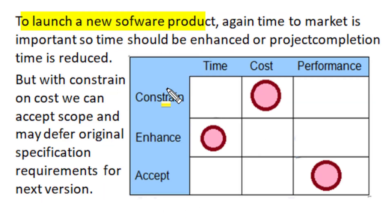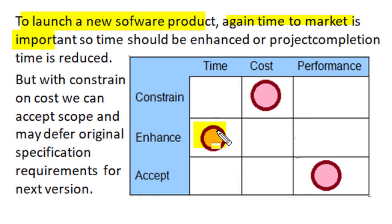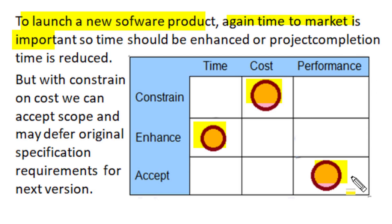Similarly, to launch a new software product in the IT industry, time to market is again important, so project completion time should be reduced. However, we cannot go over budget as cost is constrained. So we can accept the scope criteria — deferring some original specification requirements to the next improved version of the same software. This software product will be produced with enhanced time, constrained cost, and accepted scope.